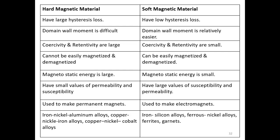Soft magnetic materials can be easily magnetized and demagnetized. Hard magnetic materials have small values of permeability and susceptibility, while soft magnetic materials have large values. Hard magnetic materials are used to make permanent magnets. Soft magnetic materials are used to make electromagnets for various machines and devices. Examples of hard magnetic materials include iron-nickel-aluminum alloys and copper-nickel-iron alloys. Soft magnetic materials include iron-silicon alloys, ferrous-nickel alloys, ferrites, and garnets.